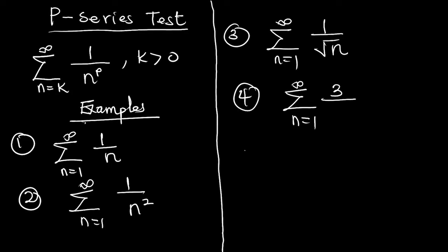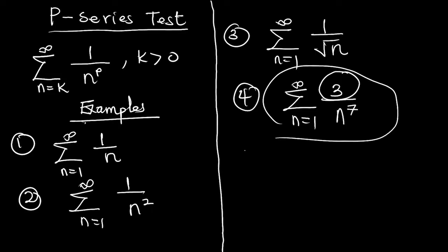Example four: 3 over n to the power 7. For this example you can see there is a constant 3 in the numerator instead of 1. A constant does not necessarily affect the divergence or convergence of a series. We can factorize the 3 out, giving us 3 times the summation from n equals 1 to infinity of 1 over n to the power 7. So bear in mind: constants do not affect the convergence or divergence of a series.